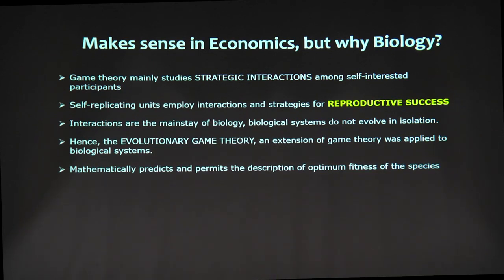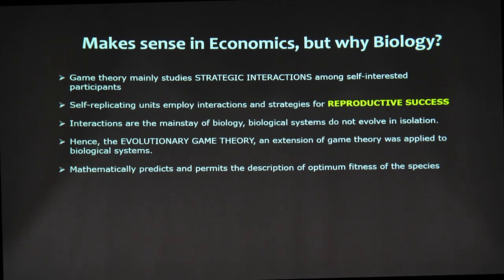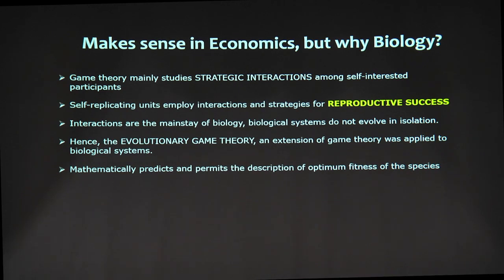The previous example makes sense economically, but why do we care about game theory in biology? Game theory mainly studies strategic interactions among self-interested participants, and in biology, self-replicating units or organisms interact with others and employ strategies for reproductive success. There is interaction, there is strategy, and interactions are the mainstay of biology — most biological systems do not evolve in isolation. So evolutionary game theory was coined, which is essentially an extension of game theory applied to biological systems, aiming at prediction and description of the optimum fitness of species.